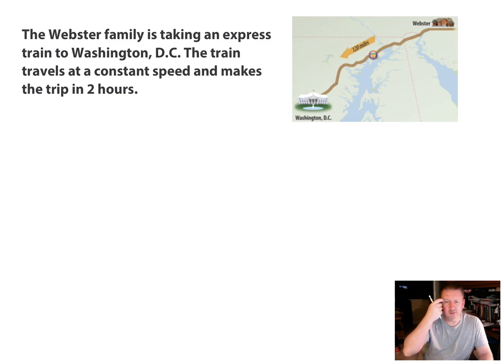All right. So here's a problem. And we're going to take this problem. We're going to put it into a rate. We're going to come up with a unit rate. And then we're going to put it in a table and see how many other equivalent rates we can come up with. And then we're going to graph it onto a coordinate plane. So here we have the Webster family. And they are taking a trip. Okay. An express train to Washington, D.C. The train travels at a constant speed and makes the trip in two hours. And you can see by the little map here that the distance is 120 miles.